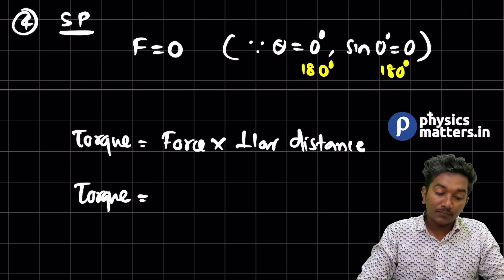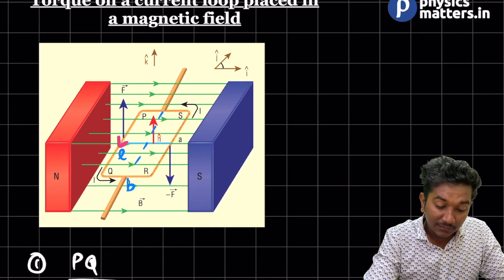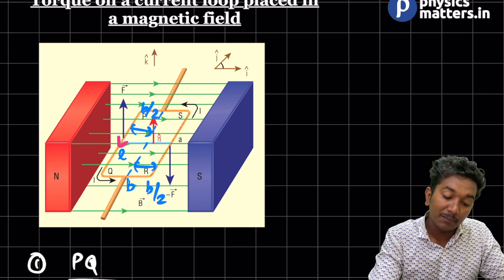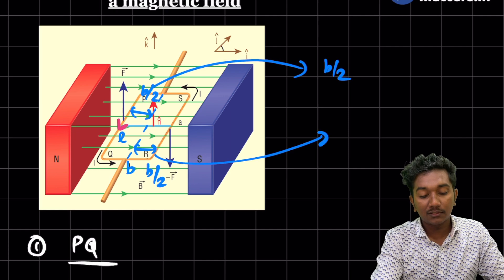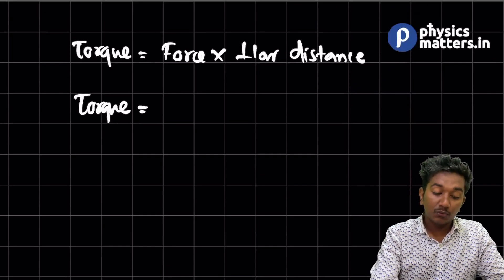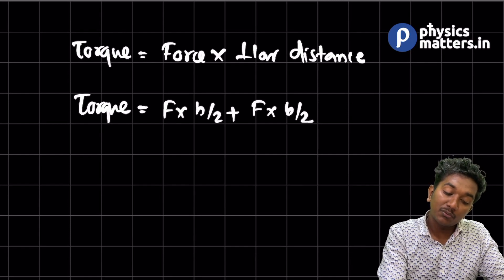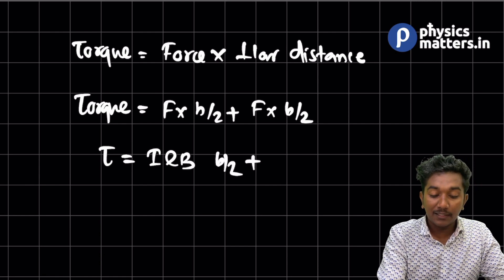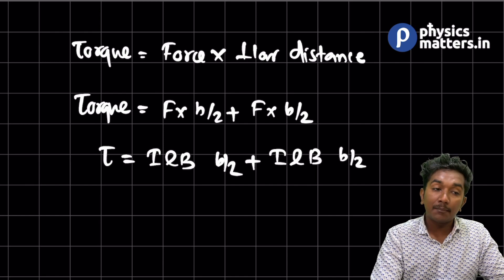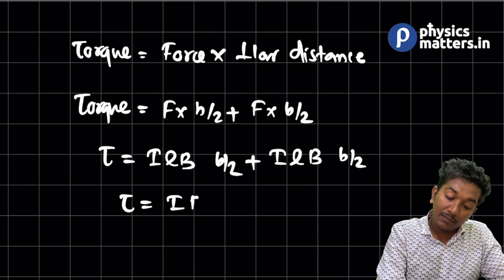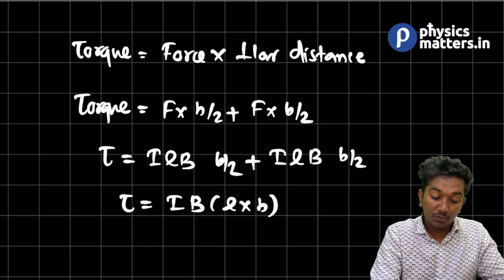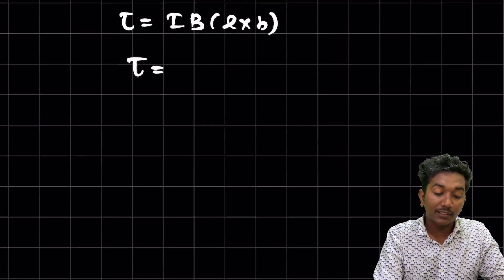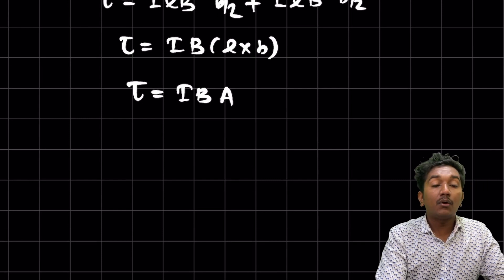The axis of rotation is in the middle. The perpendicular distance from each force to the axis is b/2. So the net torque = F × (b/2) + F × (b/2). Since F = ILB, torque = ILB × (b/2) + ILB × (b/2) = ILB × b. And L × B = area A of the loop, so torque = BIA.